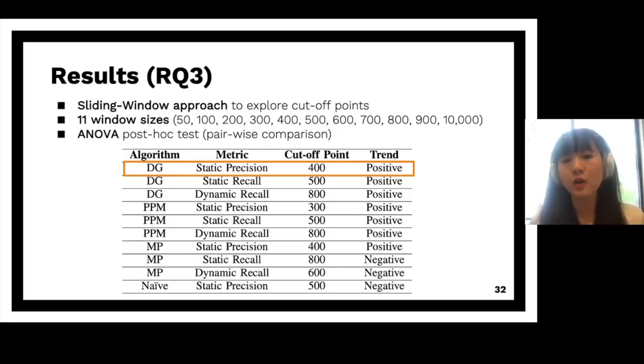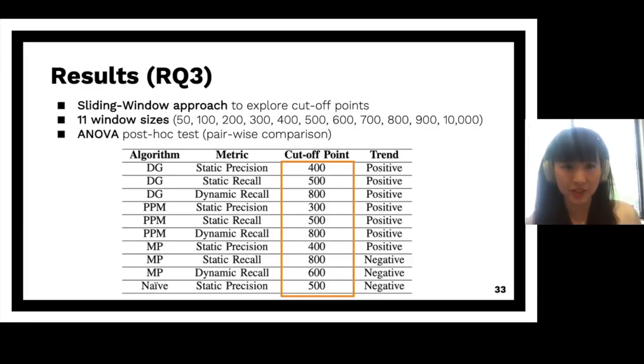This is the summary of the ANOVA test result. For example, if we're looking at DG's static precision, we found out the cutoff point is 400. And that is because ANOVA tells us that if the window size is over 400, and for all the pairs of different window sizes, ANOVA says, no, there is no statistically significant difference across their results. But when the window size is below 400, for all the pairs, ANOVA says, yes, there is a statistically significant difference across their results.